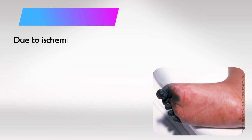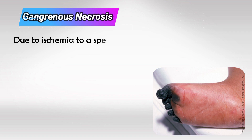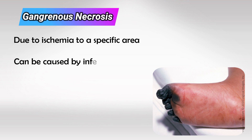Finally, we have gangrenous necrosis. This is simply the result of lack of blood, most commonly affecting distal organs such as the fingers or toes. The distal organ will not have blood for a very long time, and that will cause the organ to simply die. In a way it's an ischemic insult, but it can also be the result of infection, such as in diabetic foot with a complicated ulcer, and in that case it's more of a liquefactive issue.